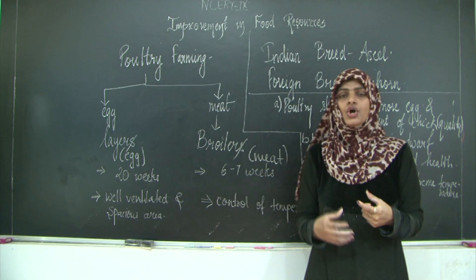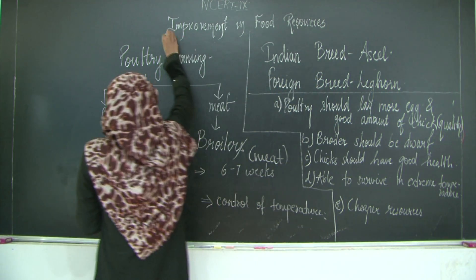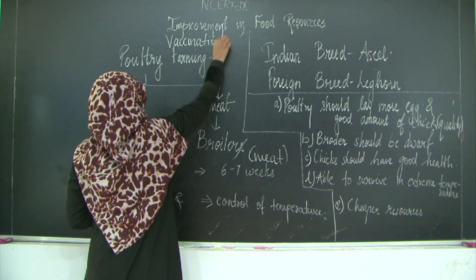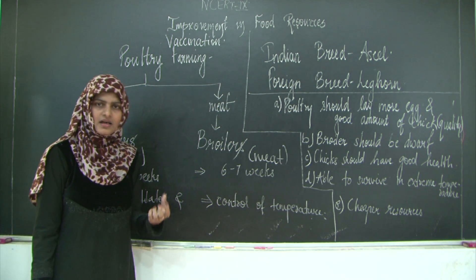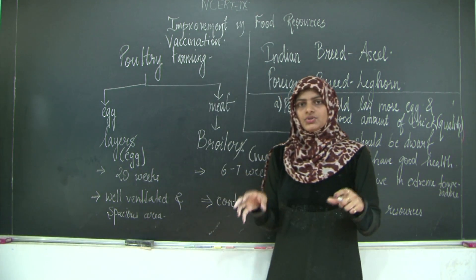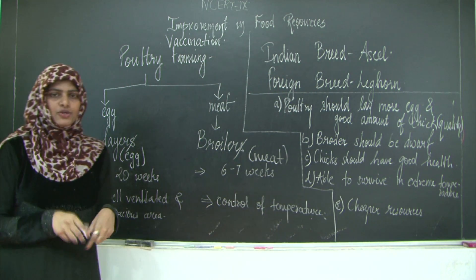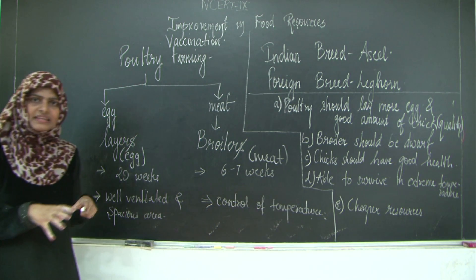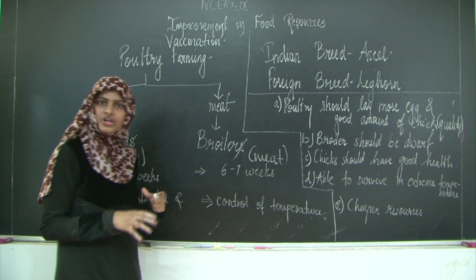There is one important way to take care of the health of the chicks, that is vaccination. The chicks are vaccinated at a younger age so they do not get any disease. Apart from that, you need to fumigate the place where you are keeping the chicks, so that any pests, lice, or ticks present will die. So fumigate the area and vaccinate them properly. This is about poultry farming.